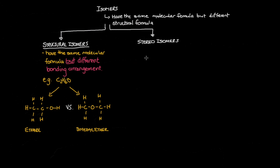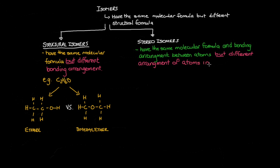Let's move on to stereoisomers. These have the same molecular formula and unlike structural isomers, have the same bonding arrangement between atoms. The difference lies with the arrangement of atoms in space. Now, stereoisomers can be subdivided into enantiomers, also known as optical isomers, and another class known as diastereoisomers.